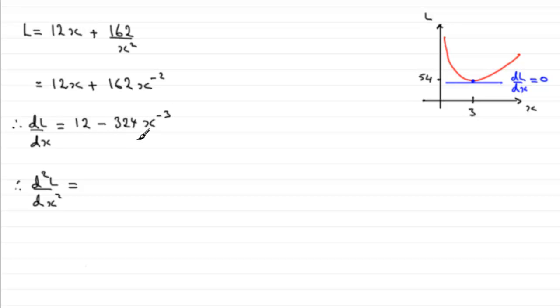That's going to give us 972x^(-4), and it's best to rewrite this then as 972 times 1 over x^4, which is 972 all divided by x^4. Now this gives us the rate of change of gradient.